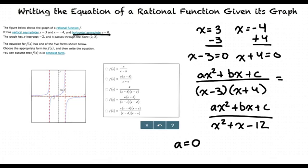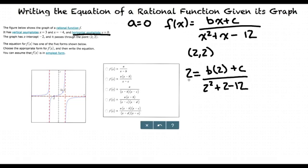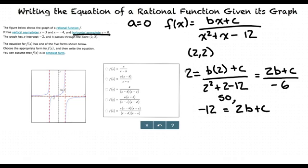So a equals 0. What about b and c? We use the x-intercept and the other point given to us to find these values. Let's start by using the point (2, 2). By plugging in 2 for f(x) and 2 for x in our function, we get 2 equals (2b plus c) divided by (4 plus 2 minus 12), which equals (2b plus c) divided by negative 6. Multiplying both sides by negative 6, we get negative 12 equals 2b plus c.